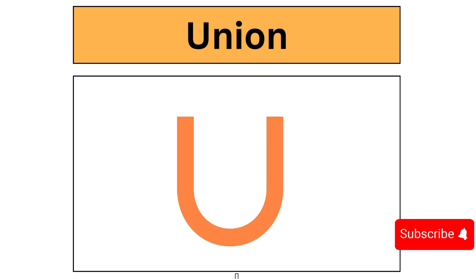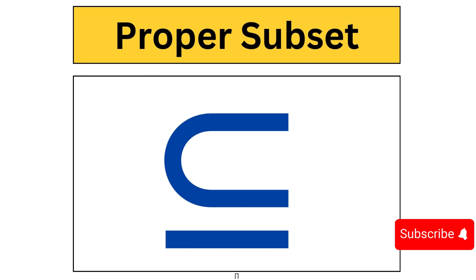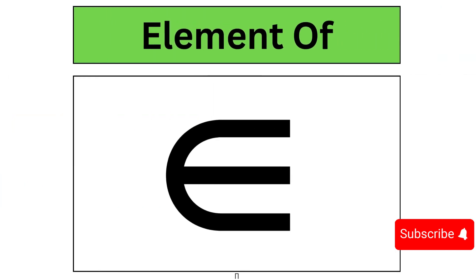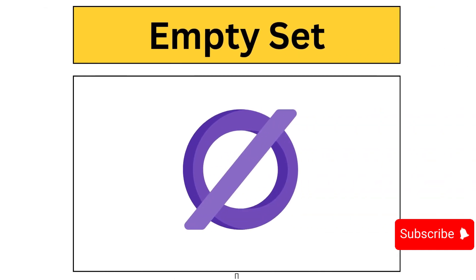Union. Subset. Proper subset. Element of. Not an element of. Empty set.